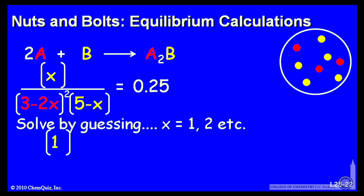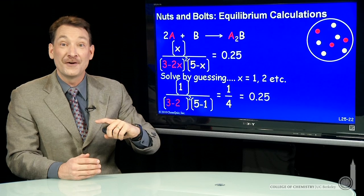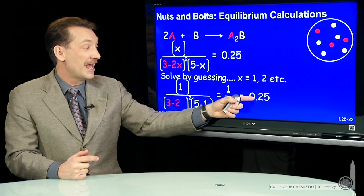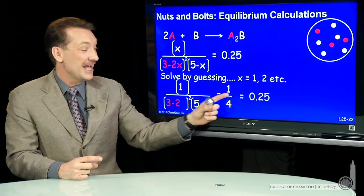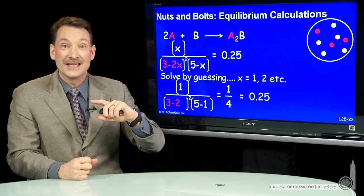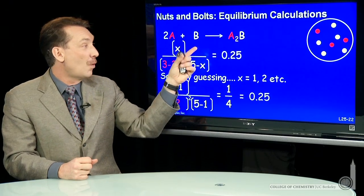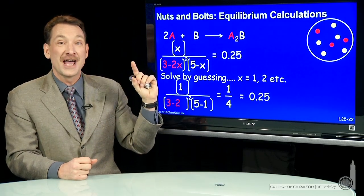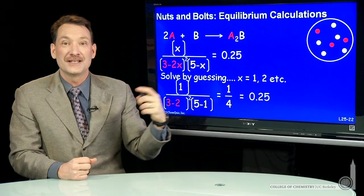So I'll guess that x is 1. I'll put 1 in for x. That gives me 1 over (3 minus 2) squared and (5 minus 1). If I look at that, that is 1 over 4. And luckily enough, my first guess gives me a Q that equals K. I have this quotient that is at equilibrium. So once one B molecule reacts, the system comes to equilibrium.